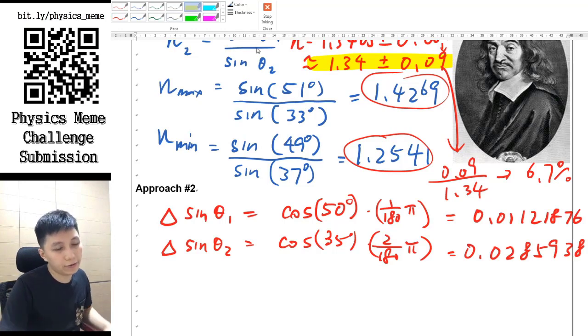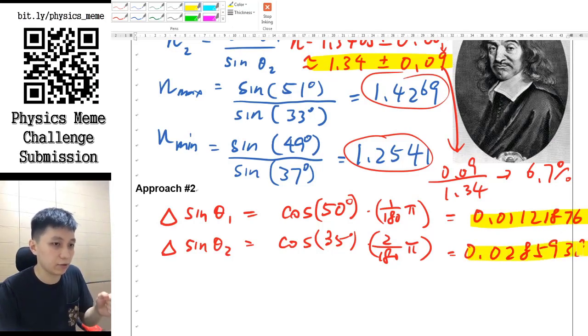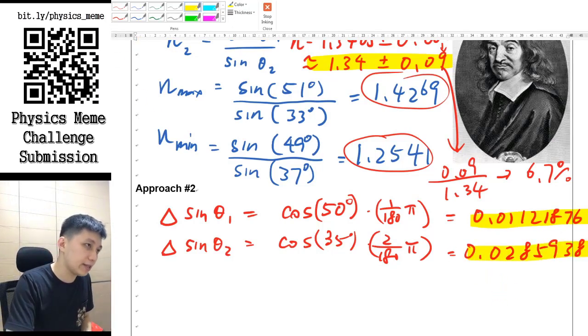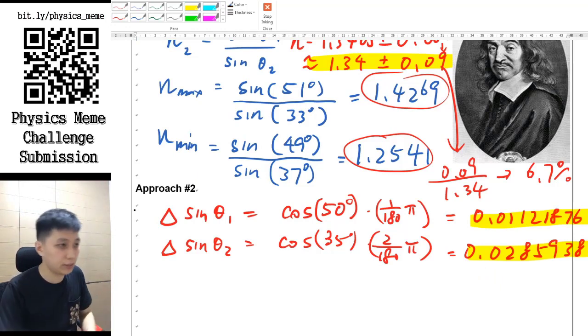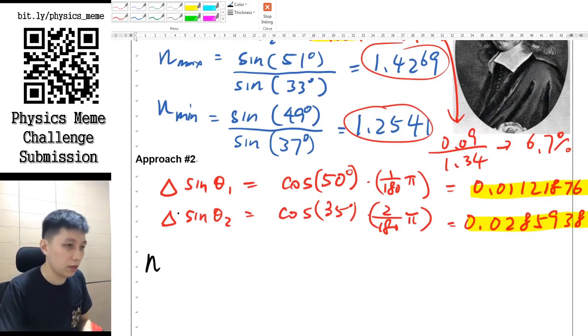We can then, using the calculator, find out the two answers which is one is 0.01 something, the other one is 0.028 something. And the next step will simply be what you do normally since n is calculated by sin θ₁ divided by sin θ₂.